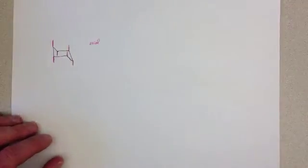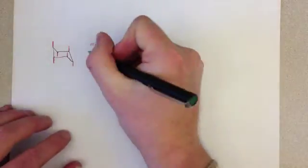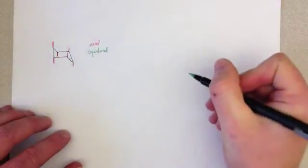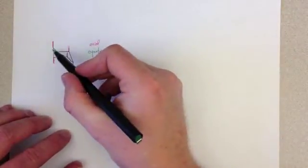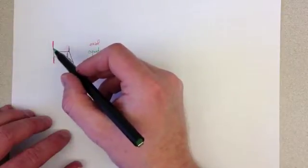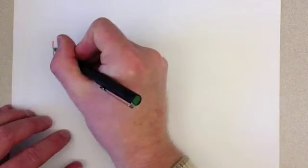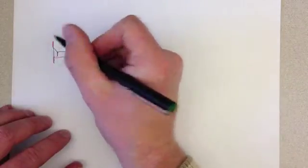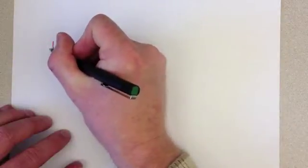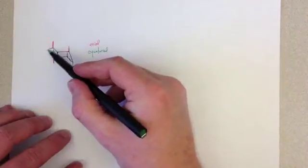Now I'm going to use green here to demonstrate the equatorial positions. And once you have the axial positions set up, these are easy to fill in. Remember, each carbon in the cyclohexane has an axial and an equatorial position. If the axial is going up, then the equatorial is going down. Remember, equatorial positions are more in the plane of the ring, so they don't go straight down, they sort of go a little bit down. So here's an equatorial down position.